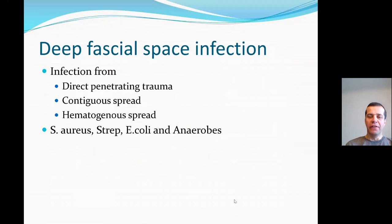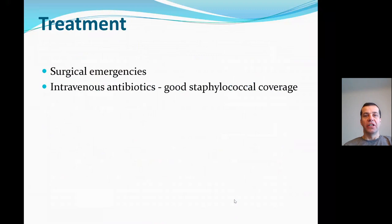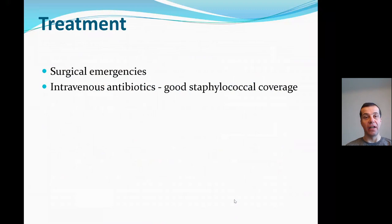There are areas of palmar swelling and exquisite tenderness localized to the involved palmar space. Hypothenar infections generally have less dorsal swelling as there is more room to expand in the hypothenar space. Infections are generally a result of direct penetrating trauma, contiguous spread from adjacent infection, or more rarely hematogenous spread. Most common bacteria include streptococcus, staphylococcus, E. coli, or anaerobes. These are surgical emergencies — patients should be started immediately on intravenous antibiotics with good staphylococcal coverage, but surgery is the mainstay of treatment, and incision and drainage should be done immediately.